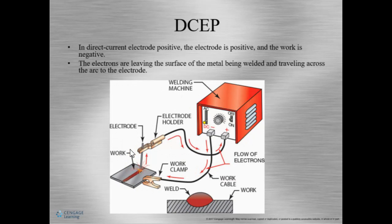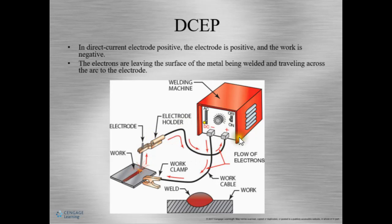DC electrode positive: direct current tells us that the current can only move in one direction. DCEP tells us that the electrode is going to be positive. The cables to the electrode holder will be plugged into the positive slot on the welding machine. The flow of electrons in this case go away from the work — we can see it comes up and away.